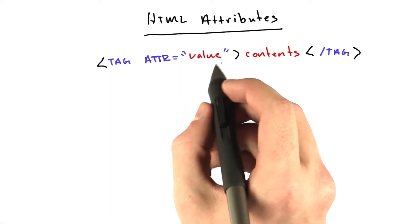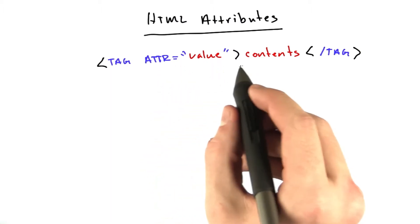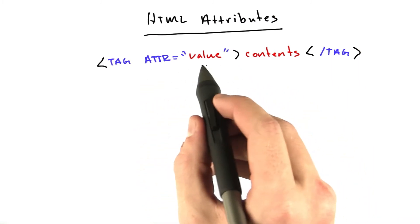And attributes these days always equal a value. Didn't used to be the case, to be honest, but everything we're going to do is equals a value. And tags can actually have multiple attributes.